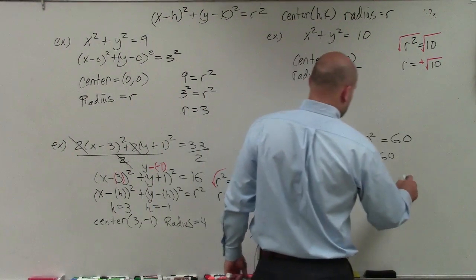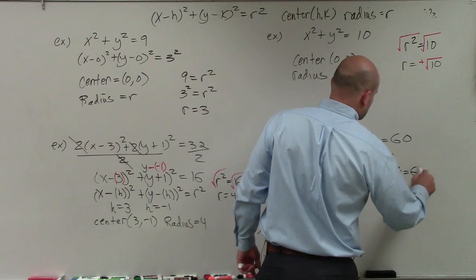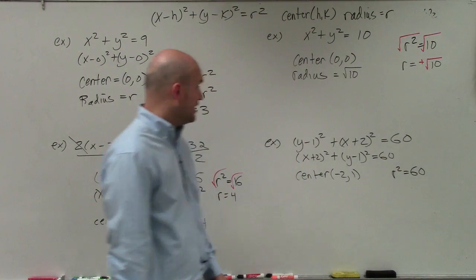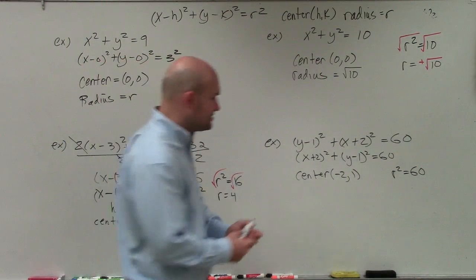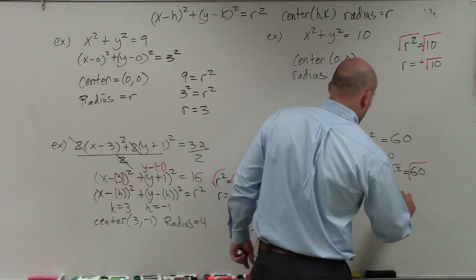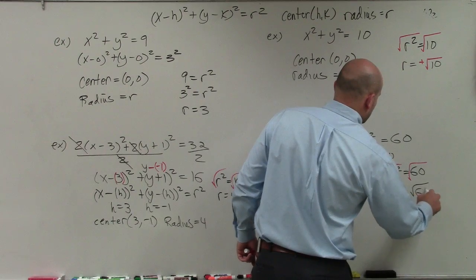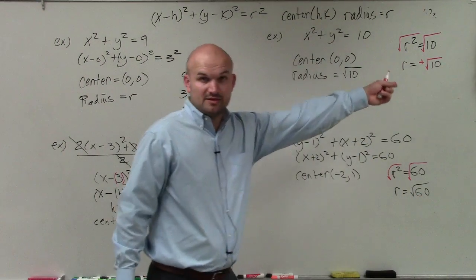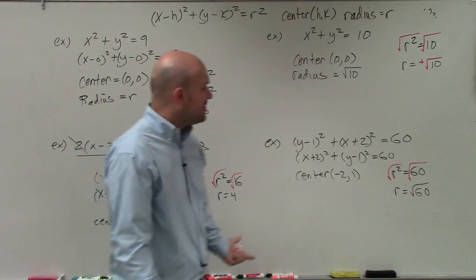The next one we have is our radius. So we could say r squared is equal to 60. We have an issue—we do not have a square number, so I'm going to take the square root. I have r is equal to the positive square root of 60, because we don't need to worry about the negative.